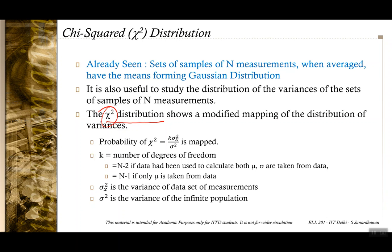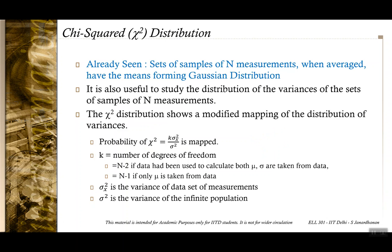The chi-square parameter is defined as k times σx² divided by σ². For a particular sample size or a particular number of degrees of freedom k, you plot a graph of the probability of k·σx²/σ² being of a particular value.